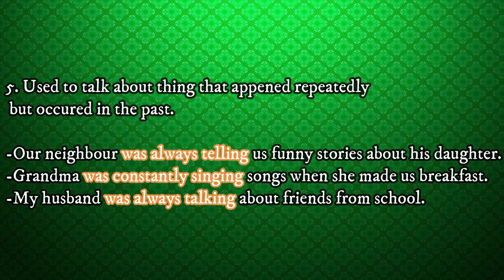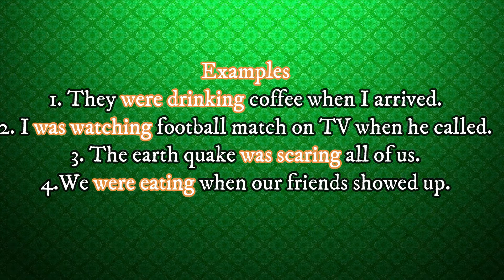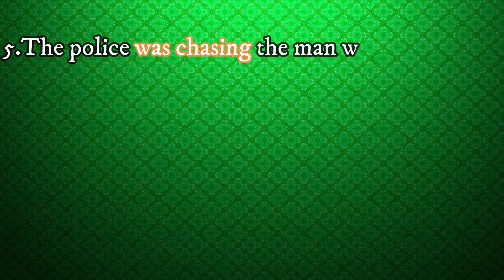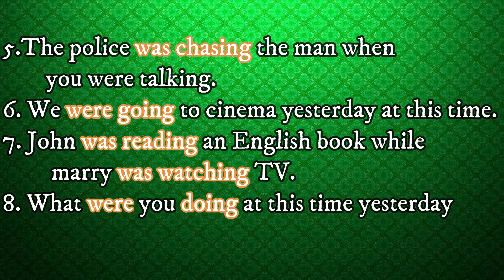Examples: Our neighbor was always telling us funny stories about his daughter. Grandma was constantly singing songs when she made us breakfast. My husband was always talking about friends from school. More examples of past continuous tense: They were drinking coffee when I arrived. I was watching a football match on TV when he called. The earthquake was scaring all of us. We were eating when our friends showed up. The police was chasing the man. While you were talking, we were going to the cinema. Yesterday at this time, John was reading an English book while Mary was watching TV.